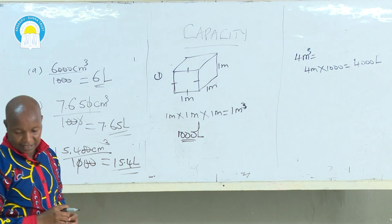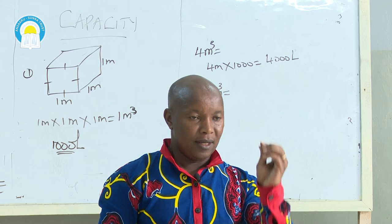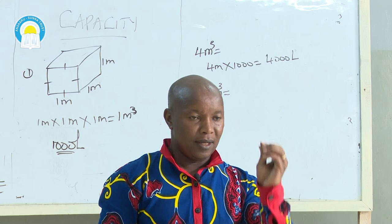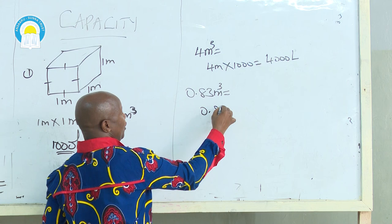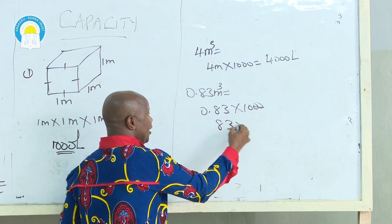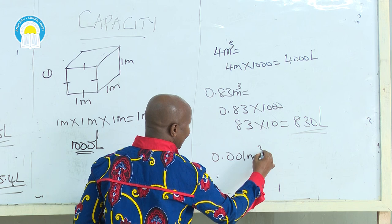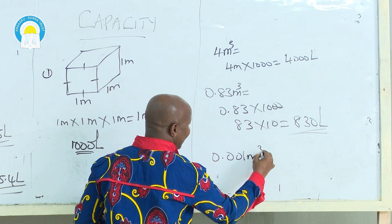Another example: you are given 0.83 cubic meters. They ask you to convert into liters. Multiply by 1,000. We have 0.83 × 1,000. Remember, we have two decimal places — the two zeros kill the decimal places. So we have 83 × 10, which equals 830 liters.